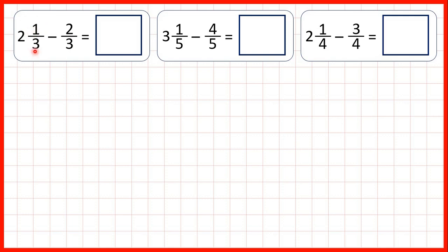So what we can do is exchange with our whole number. One less than two is one, and that gives us three more thirds, so we can add the denominator to the numerator. Three plus one is four, so one and four-thirds is the same as two and one-third.